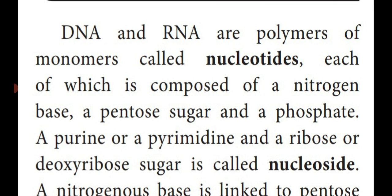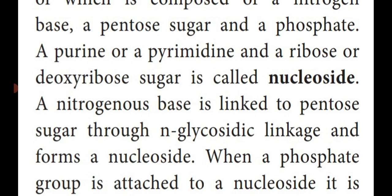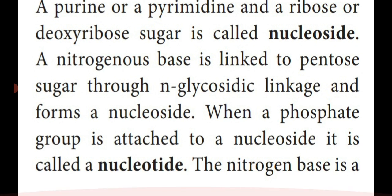A nucleotide consists of a nitrogenous base, a 5-carbon sugar (that is pentose sugar), and a phosphate group. The nitrogenous base is divided into two types: one is purine and the other is pyrimidine. A purine joined with ribose sugar in RNA forms the nucleotide; a purine joined with deoxyribose sugar in DNA forms the nucleotide. A nitrogen base is linked with pentose sugar by N-glycosidic linkage to form a nucleoside, and a phosphate group is attached to form the nucleotide.